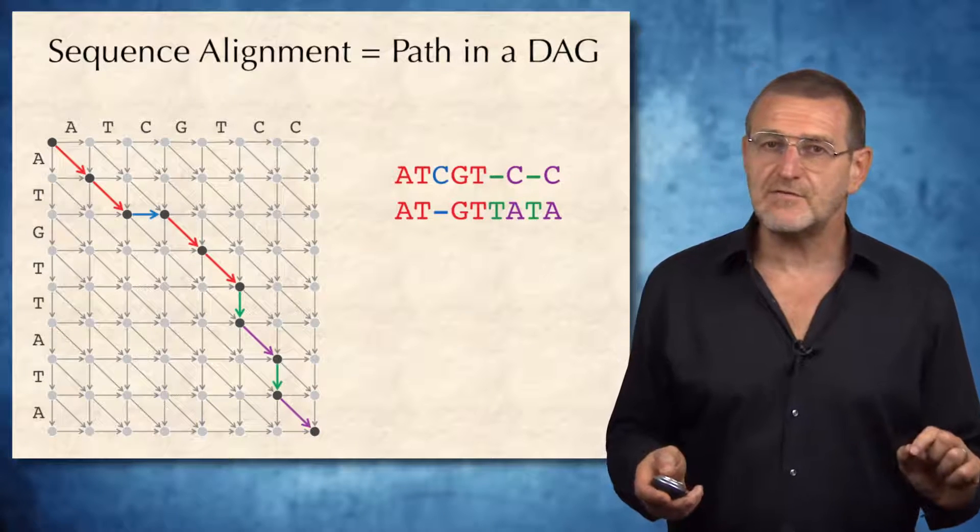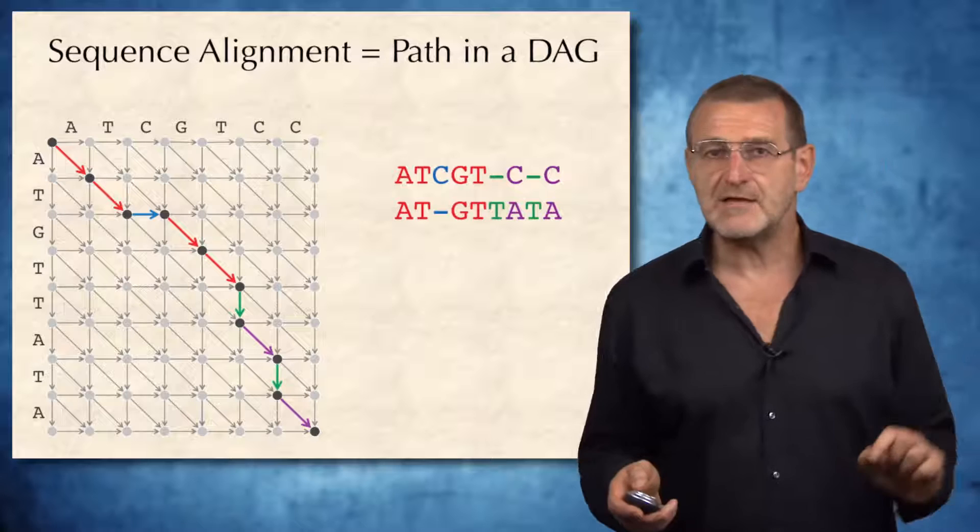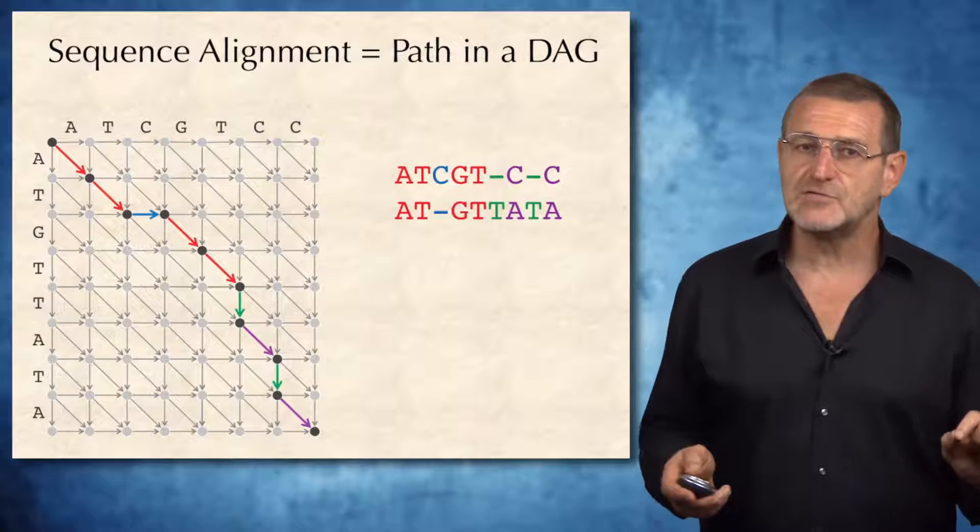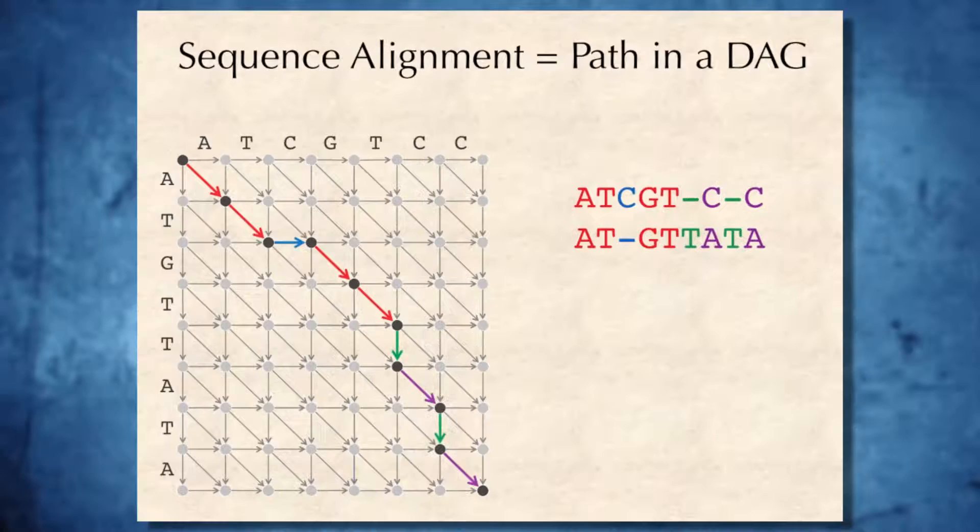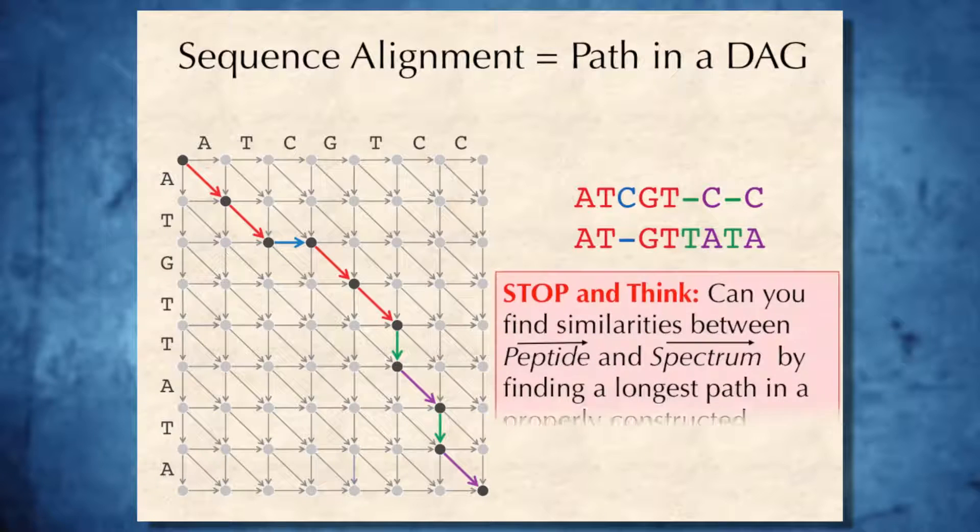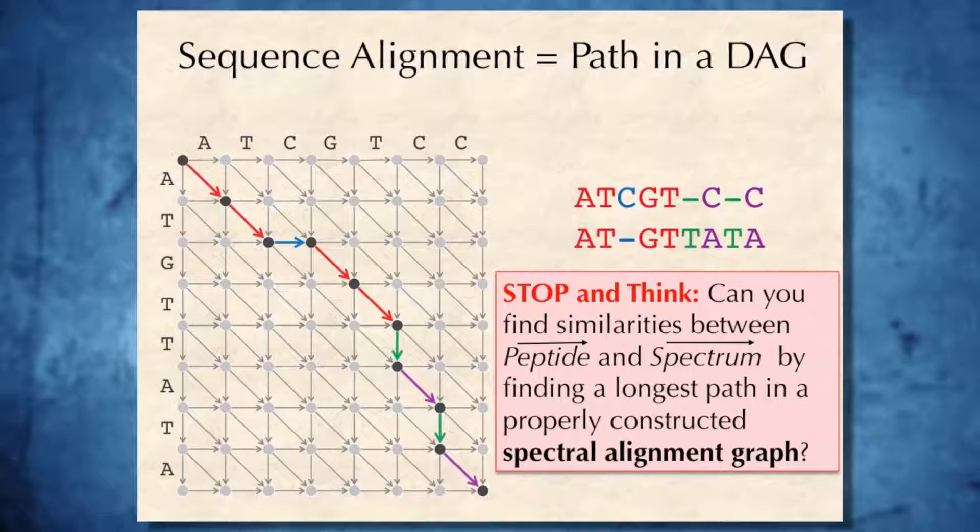And therefore, maybe we can use the analogy with sequence alignment, where alignment corresponds to the minimum number of insertions, deletions, and substitutions of amino acids. So our goal is to figure out whether we can find similarities between peptide vector and spectral vector by finding the longest path in a properly constructed spectral alignment graph. The only question is how to construct this graph.